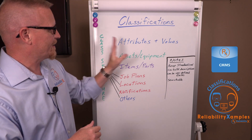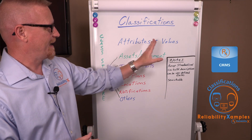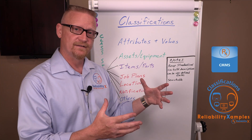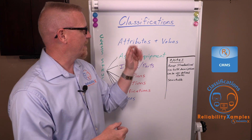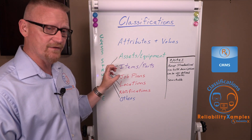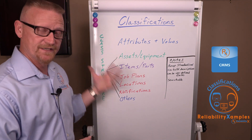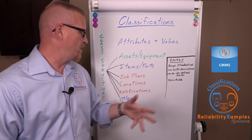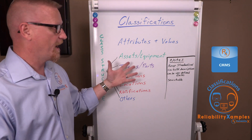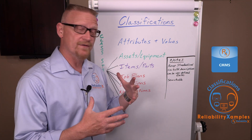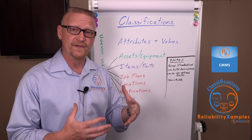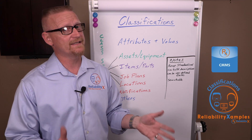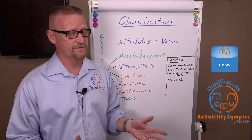Attributes and values are a list inside the database. You then apply those to different types of records, such as your asset or equipment record, items or spare parts — those are the most common use for classifications. However, that is not the only use for classifications.